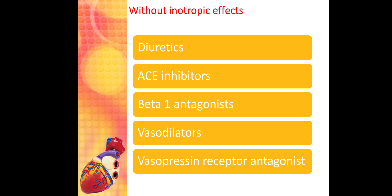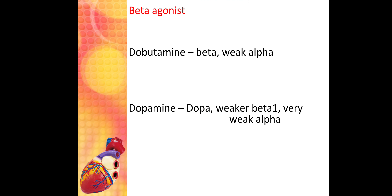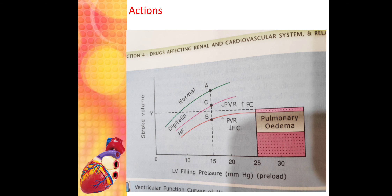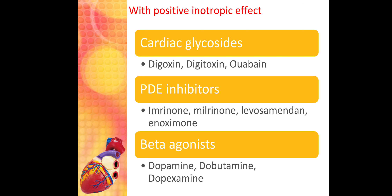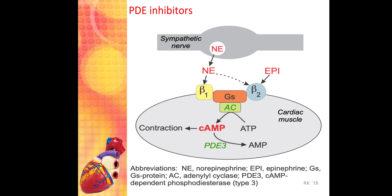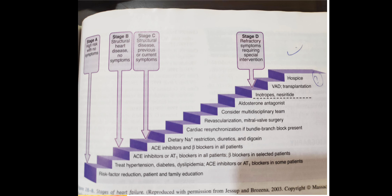In summary, drugs with inotropic effects are generally used for acute management, while drugs without inotropic effects are used for maintenance. The overall management of heart failure is organized into four stages from Goodman and Gilman. Stage A is high risk with no symptoms — manage by risk factor reduction, patient and family education, and treating associated conditions like hypertension and diabetes.